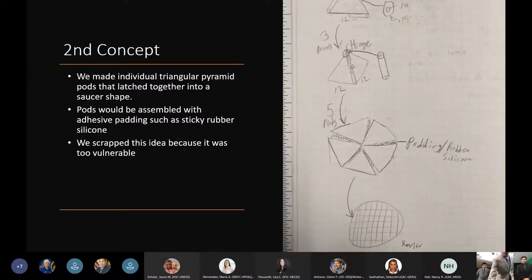Our second design was a configuration of multiple pyramid pods that came together to form a saucer. We would attach these pods with some type of adhesive, which we eventually decided on velcro. But we abandoned this idea because we believed it had too many vulnerabilities on landing, with too many sharp corners or places where the pod would break on impact.